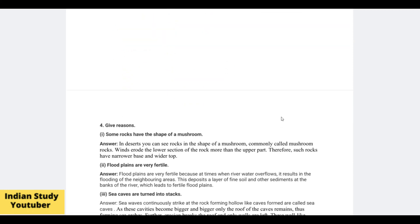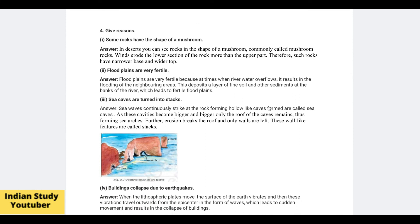Give reasons — some rocks have the shape of a mushroom. In desert areas, when wind blows it erodes the lower portion of the rock more than the upper portion. Because of repeated erosion at the base, that area becomes thin and narrow, while the top remains wider. This is why these rocks have a narrow base and a wider top, giving them a mushroom shape.